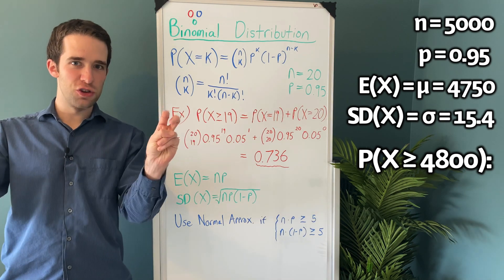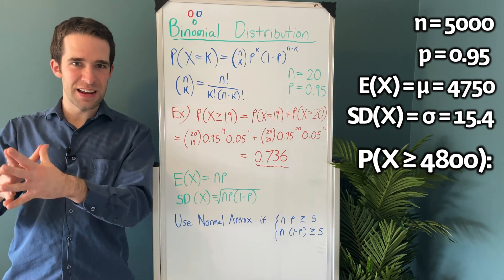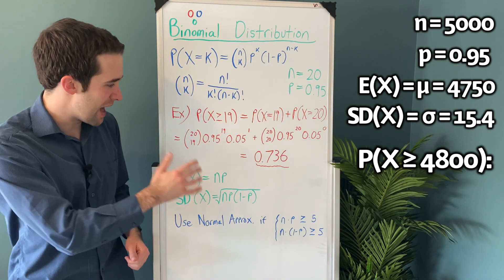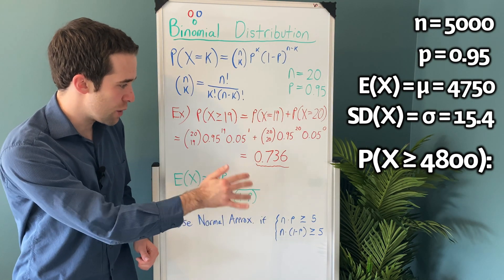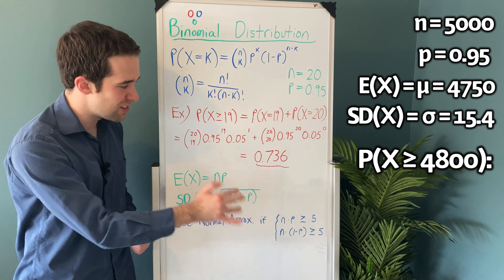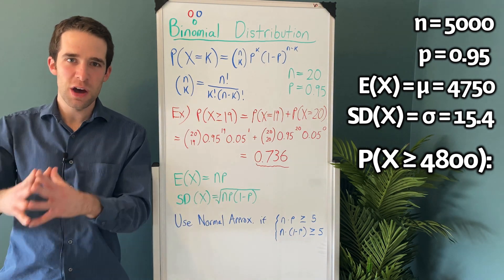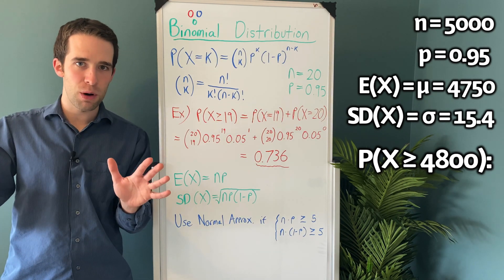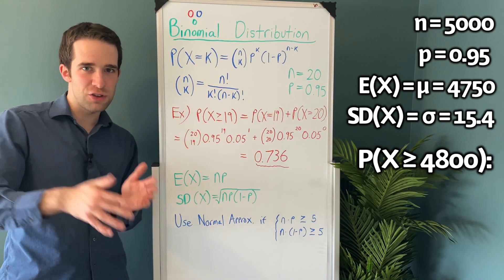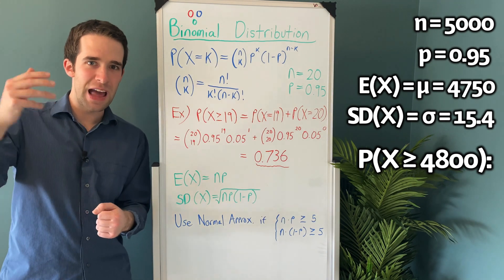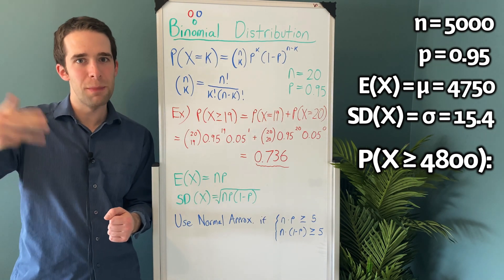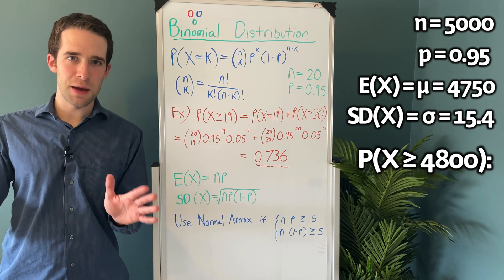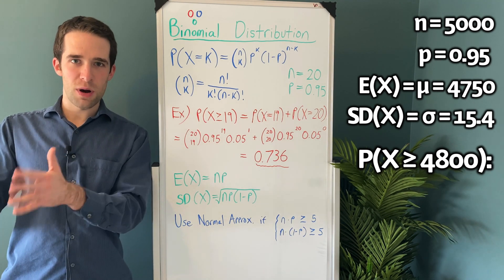Now what's considered a large enough sample size is not an exact science, but generally the case is if you have n times p greater than or equal to 5 and n times 1 minus p greater than or equal to 5, you can use the normal approximation. If you have a more conservative approach, you can change the number 5 to the number 10. So you're comparing n times p and n times 1 minus p to 10 instead of 5. In our case here, we have more than large enough of a sample size. We can use the normal approximation.